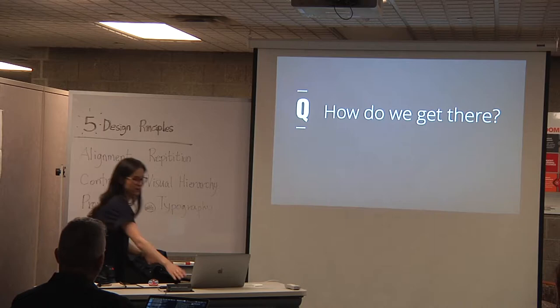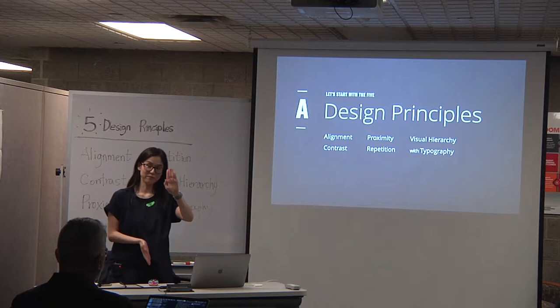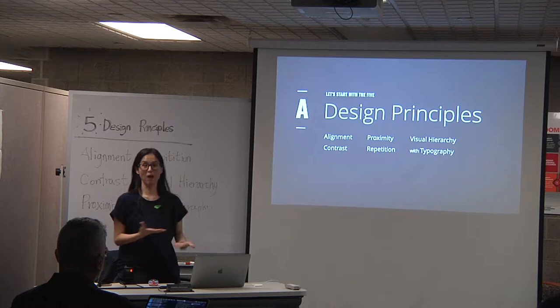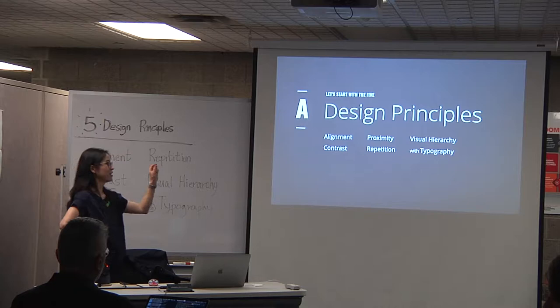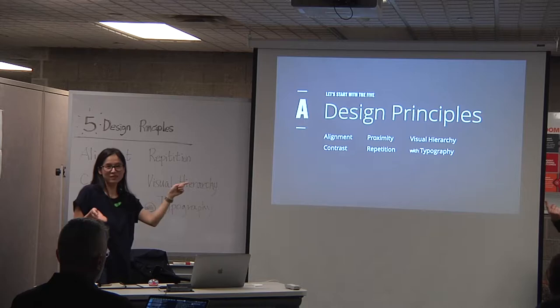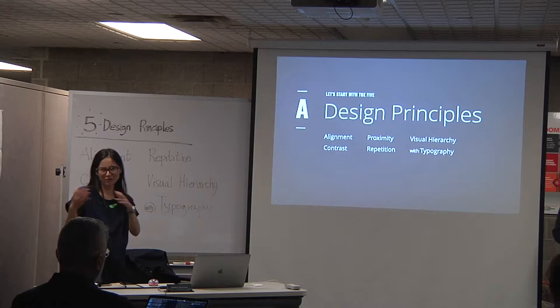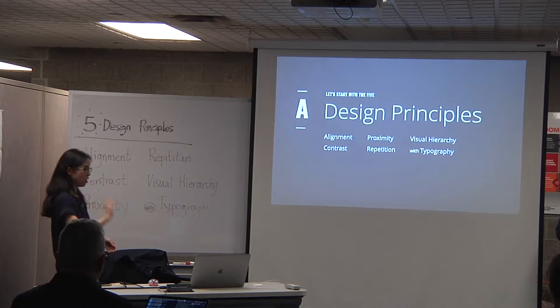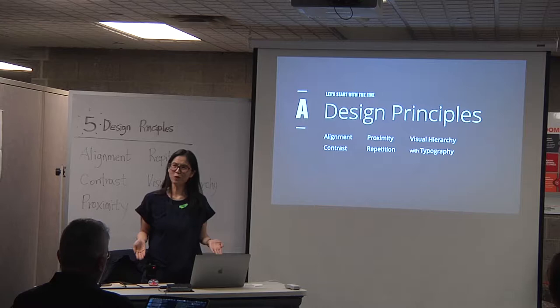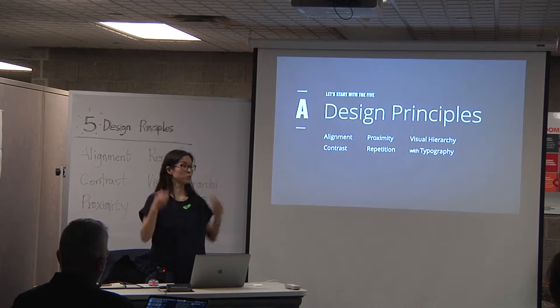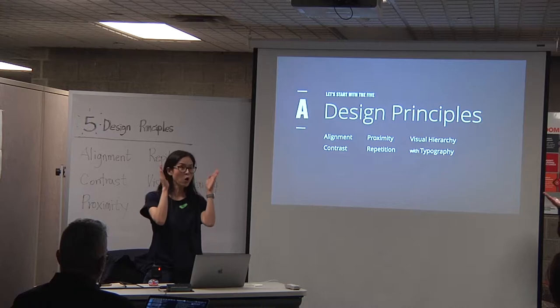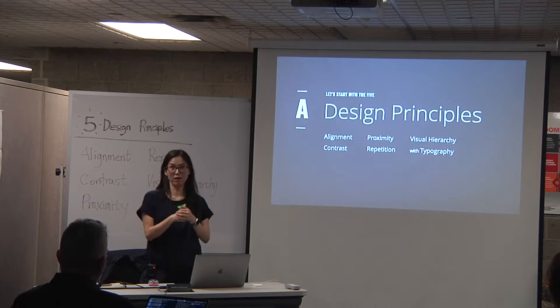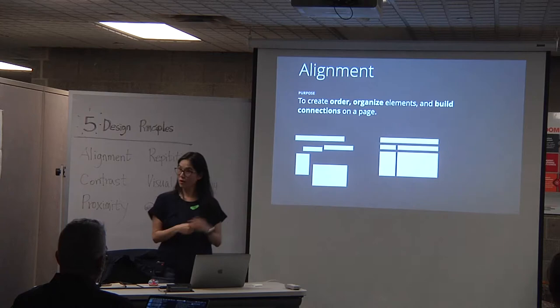I'm only talking about five principles today, though there are more. These are: alignment, contrast, proximity, repetition, and visual hierarchy with typography. The thing is, when you go through these principles, you already know them — because they're already wired in your brain. From Gestalt psychology, we already know that things that are aligned get grouped together, and things that are apart are seen as separate.